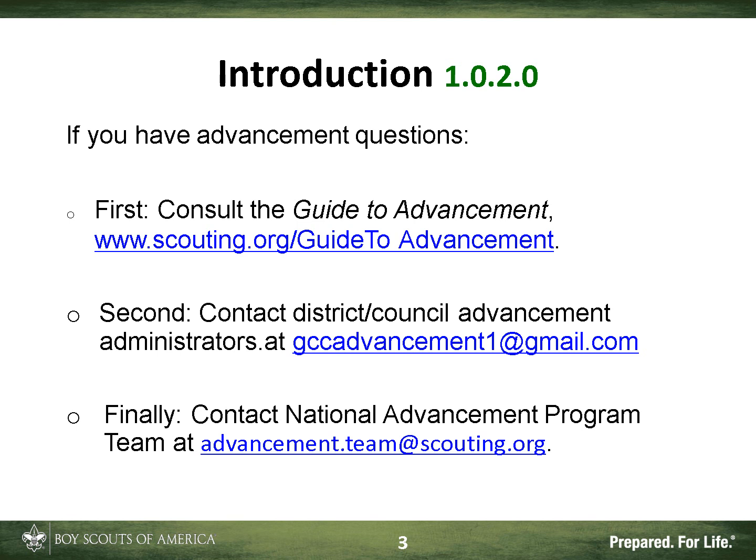If you have questions concerning boards of review, first check the Guide to Advancement — there's an entire chapter on boards of review and another chapter on the Eagle Scout process. If you can't find your answer there, contact the Council Advancement Team at gccadvancement1@gmail.com. If you still don't get your answer, you can contact the National Advancement Program Team at advancement.team@scouting.org.